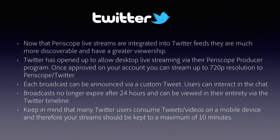If you go live on Periscope, it shows up in your Twitter feed to your viewership. However, they've recently opened up live streaming from other devices using what's called the Periscope Producer program. This is something that you apply for, and once you apply — which they usually approve everyone — you get approved usually about 24 hours later. From that point on, you'll be able to set up live streaming from something other than your phone.